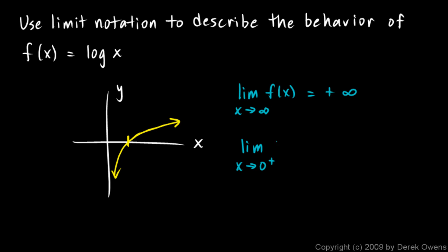And we can say the limit as x approaches zero from the right. We can't approach zero from the left because the function is not defined over in this region where x is negative, but it is defined where x is positive. And as we approach zero from the right, this function zooms way down, so the limit as x approaches zero from the right is negative infinity.